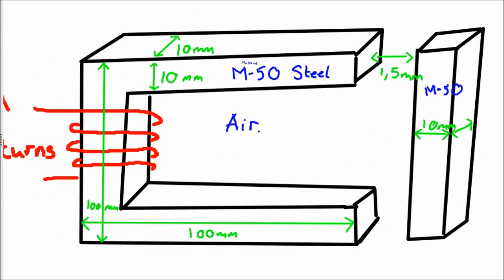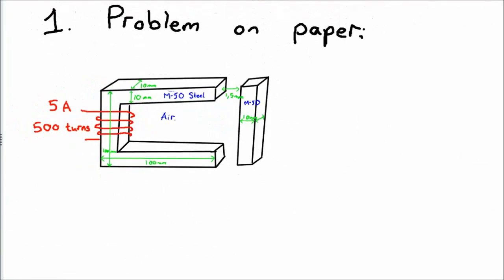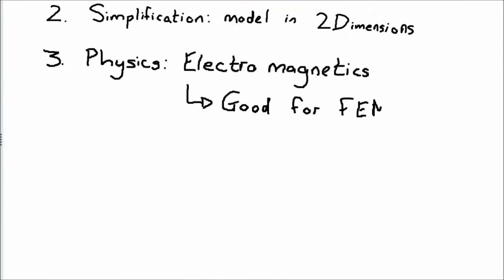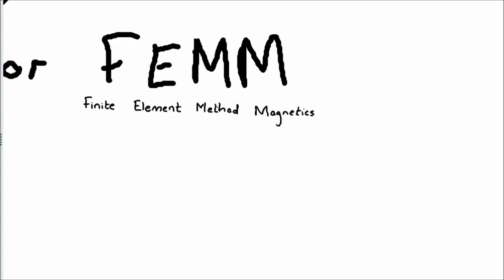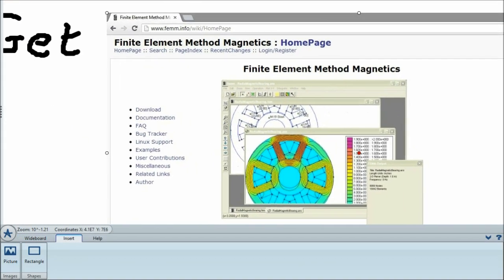In terms of simplification, we will use the 2D representation of this geometry, and the computer, or the software, will infer the 3D geometry. Based on this information, let us go ahead and use FEMM to solve our problem.